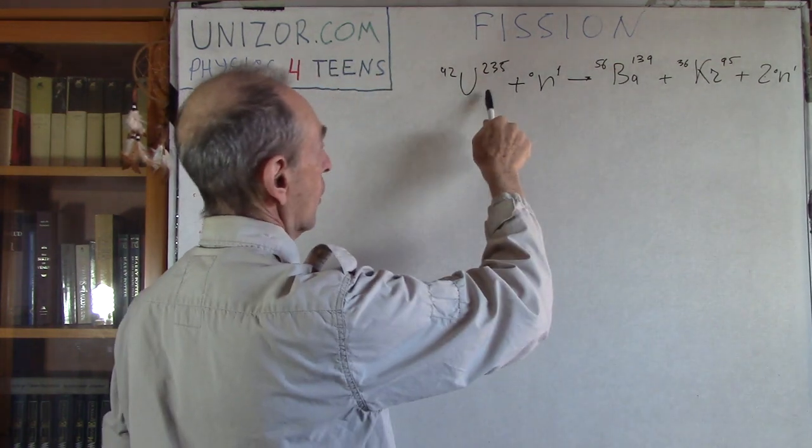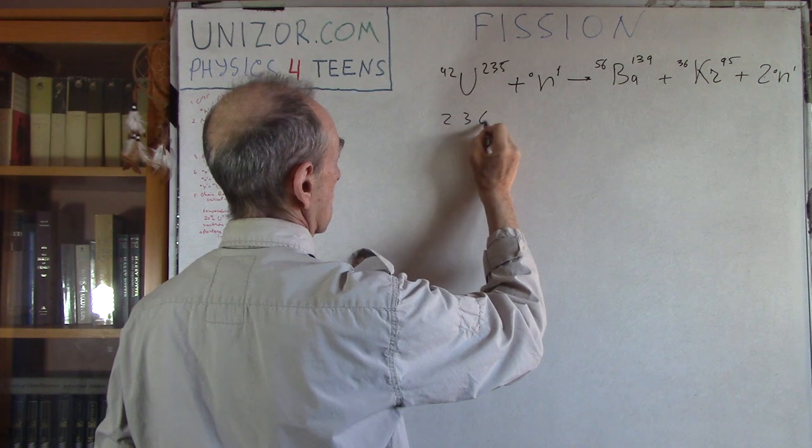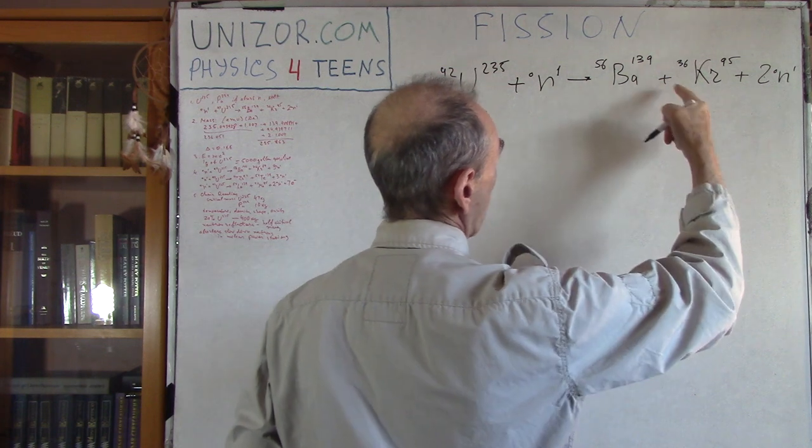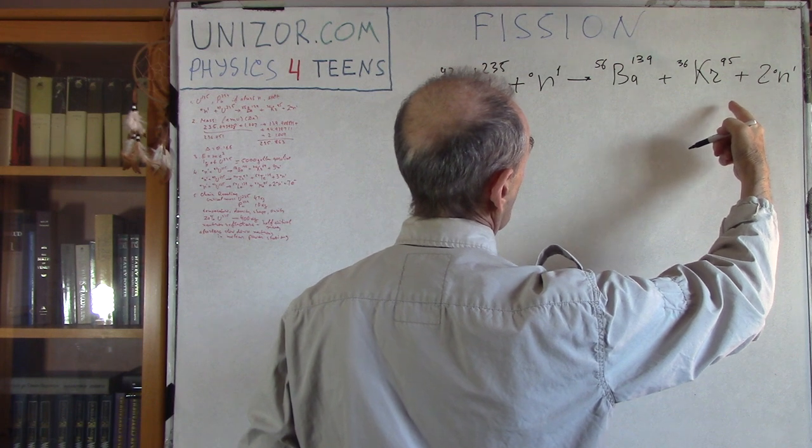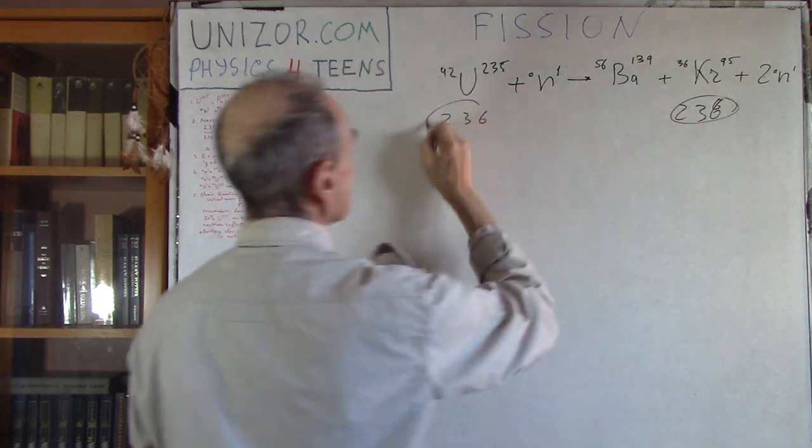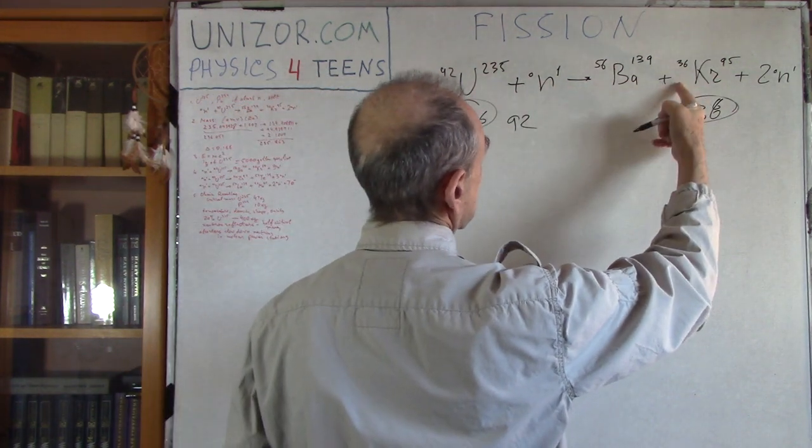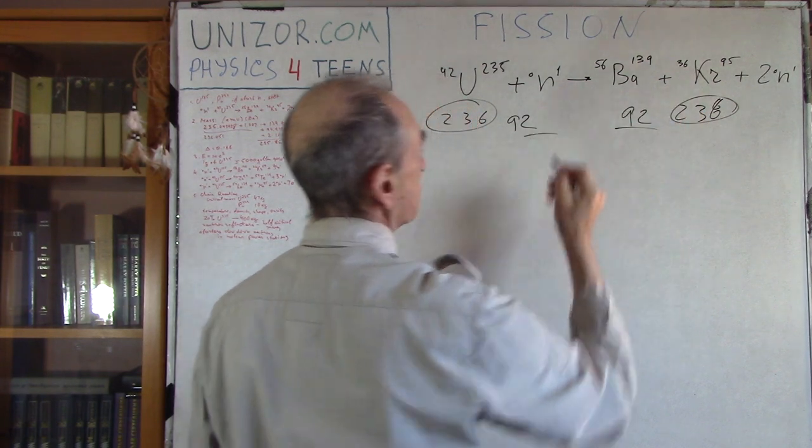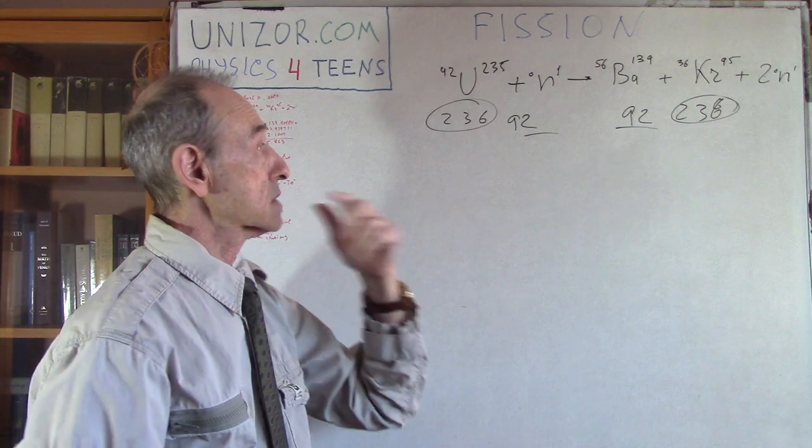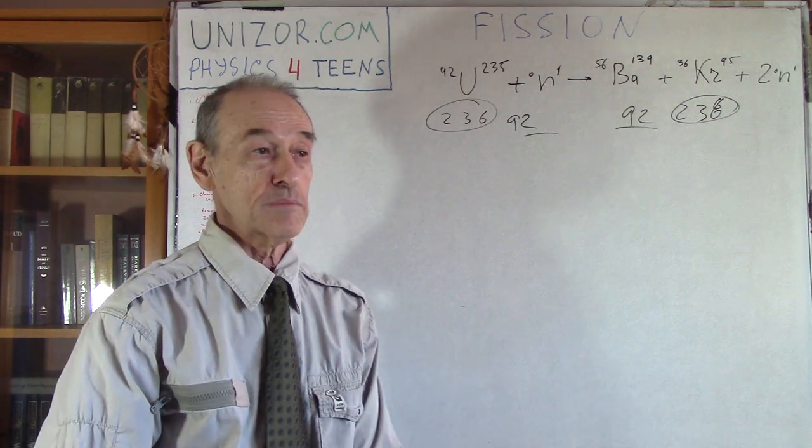Let's just count the number of particles. 235 plus 1 is 236. 139 plus 94 plus 3 is 236. So number of particles is okay. Now the electric charge, 92 plus 0 is 92, and 56 plus 36 is also 92. So we have balance. Nothing disappeared actually. Electric charge is the same, which means number of protons, and total number of particles is also the same, so number of neutrons is the same. Everything is great.